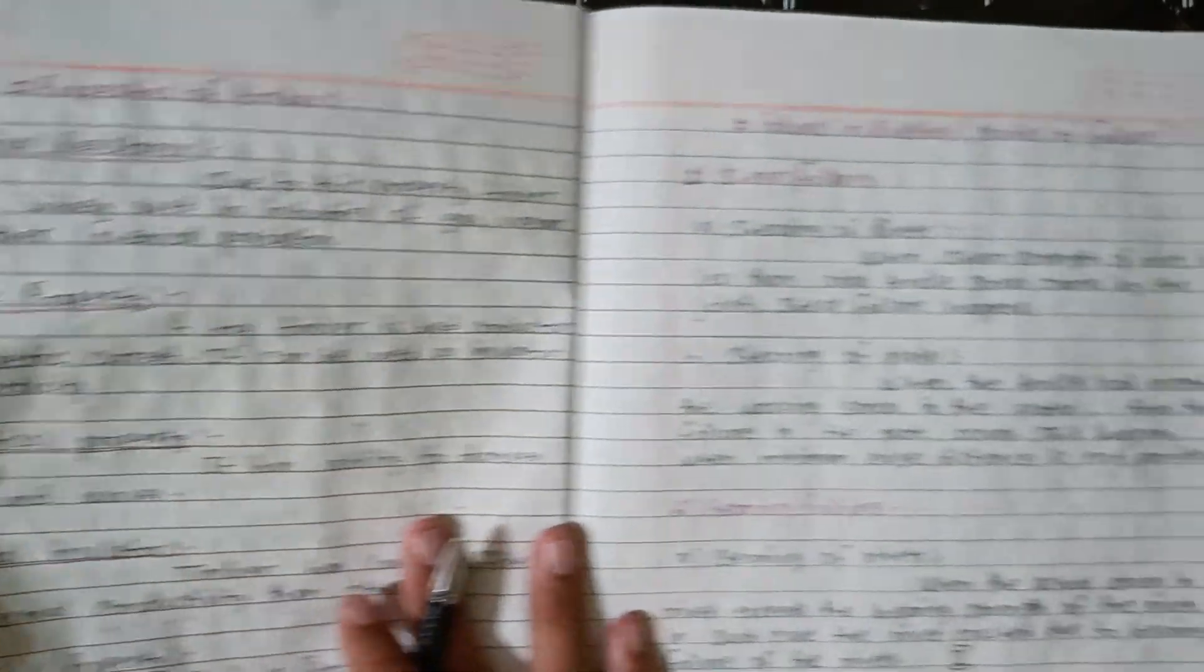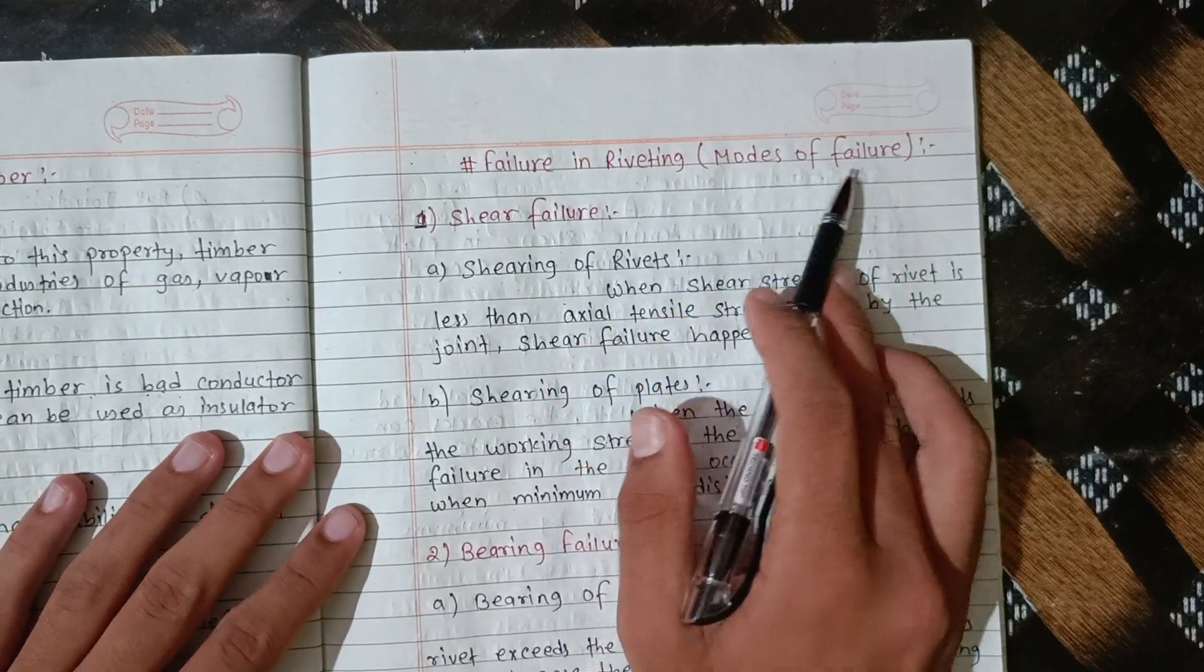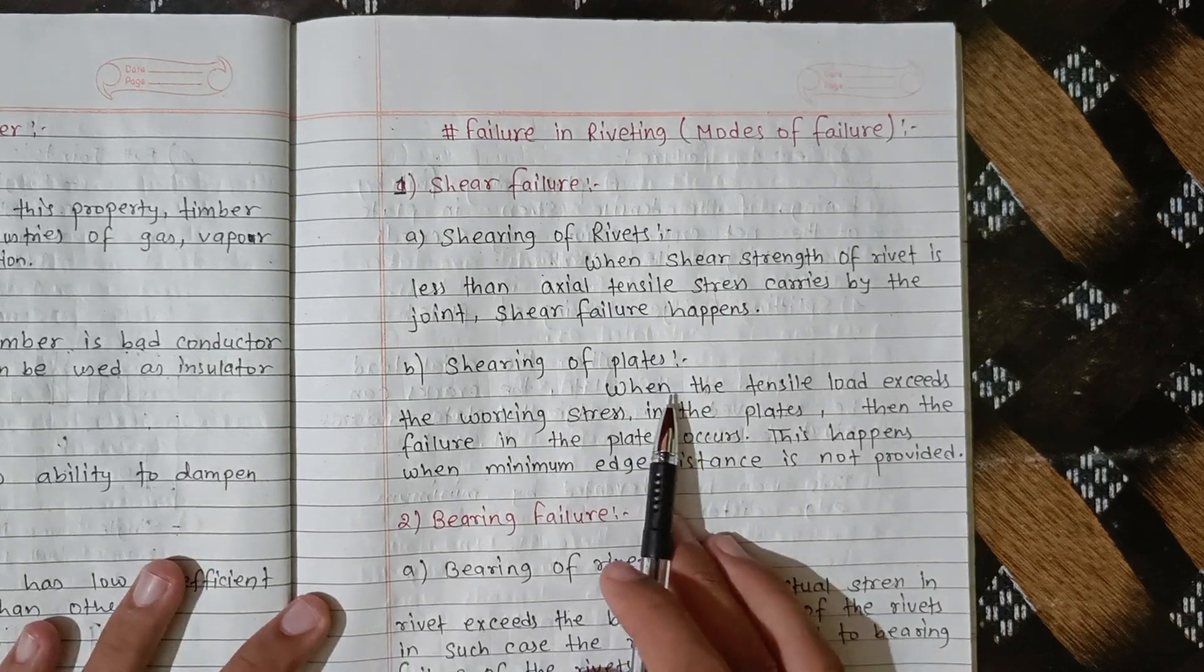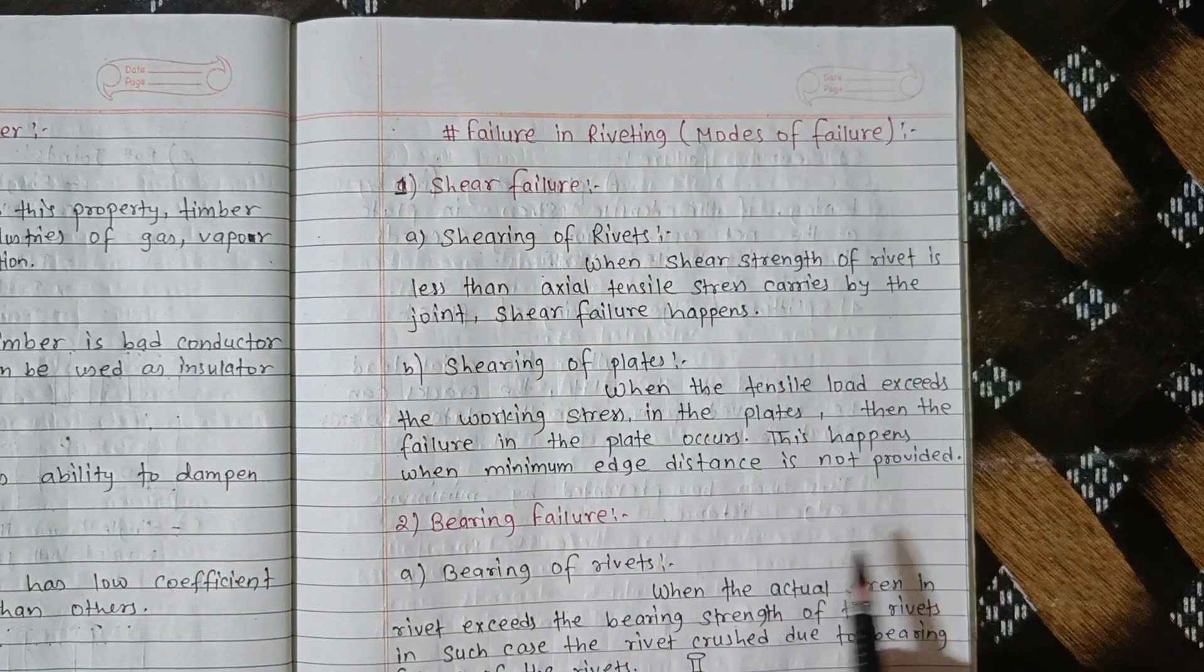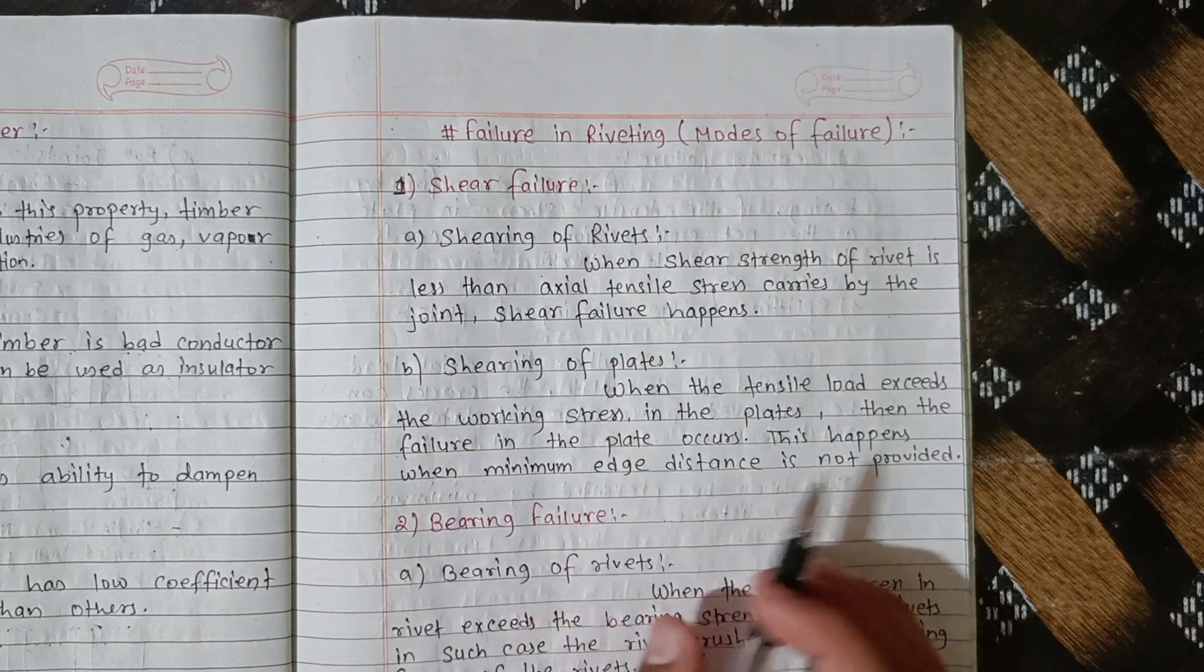Now we have to explain the topic of failure or modes of failure. In the exam, there are some questions you can be asked. The modes of failure are 4-5% of the questions. We have shear failure, tear failure, and bearing failure.